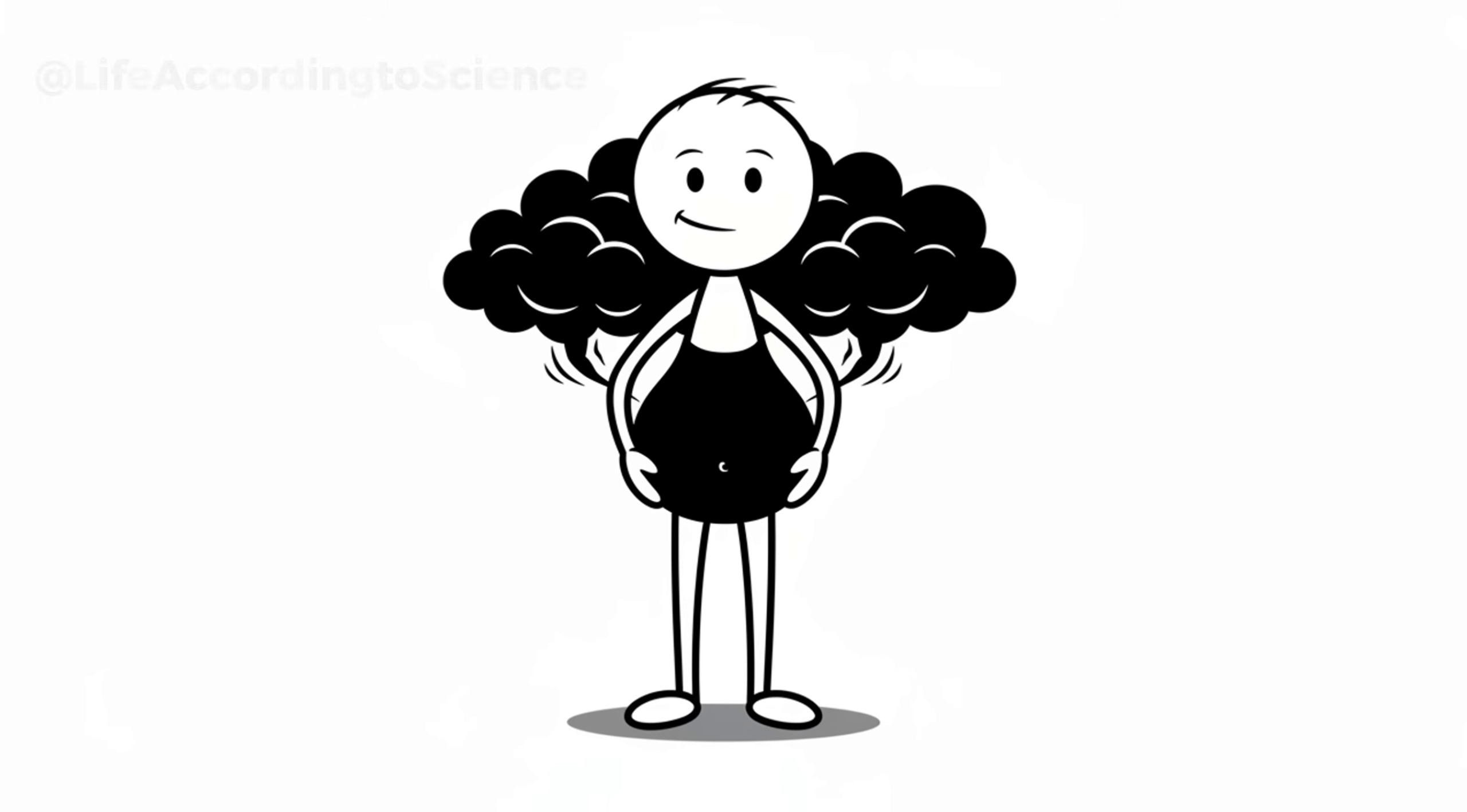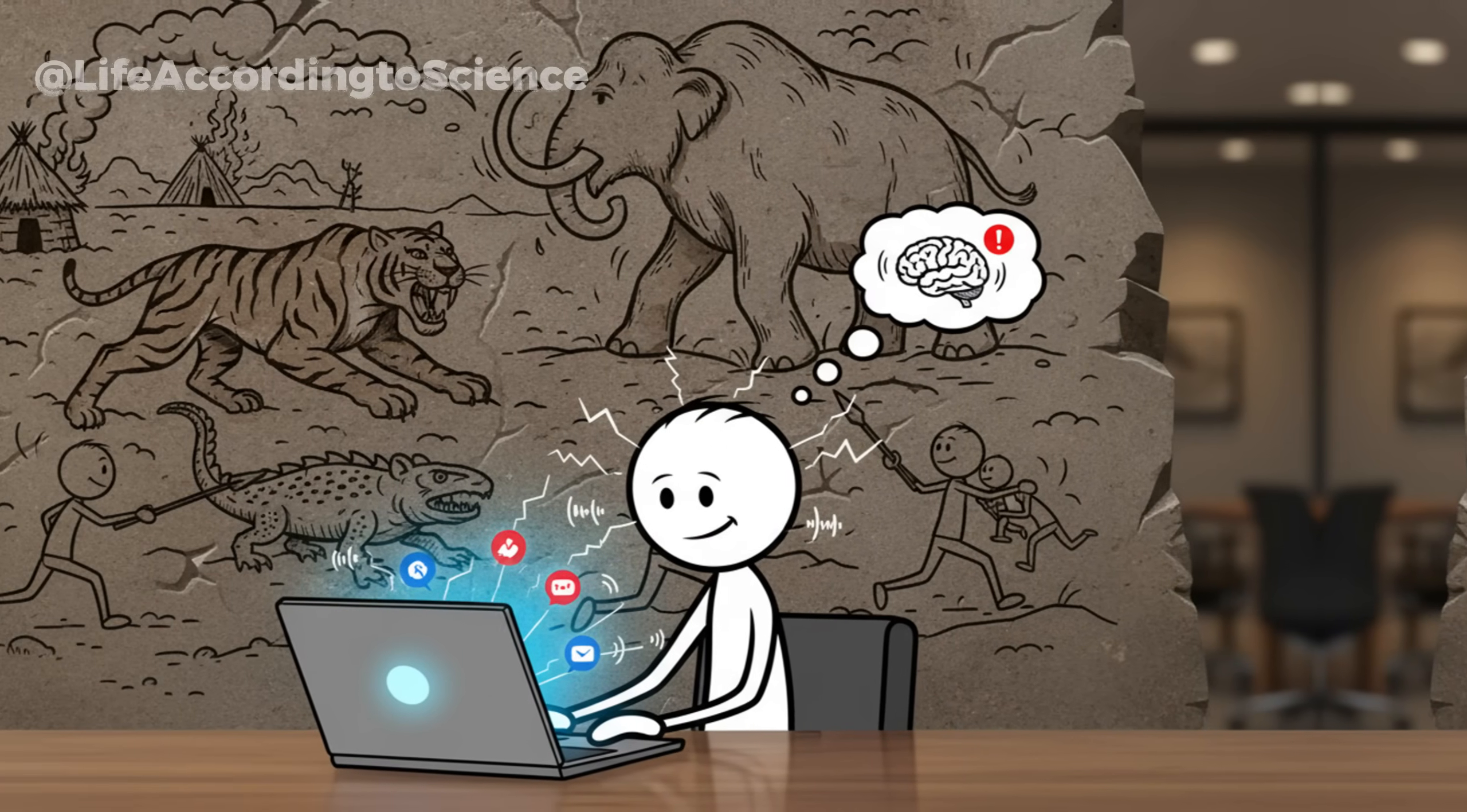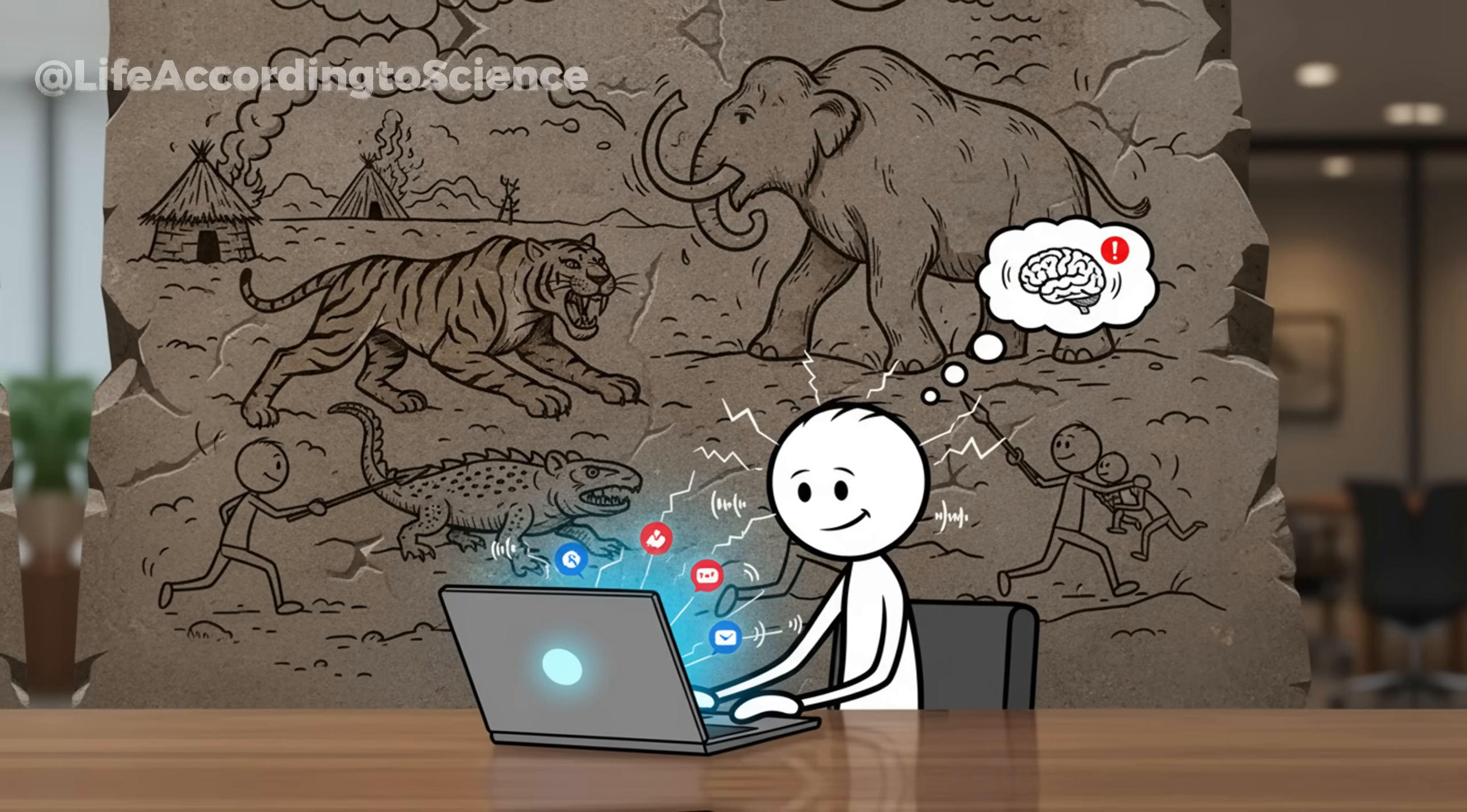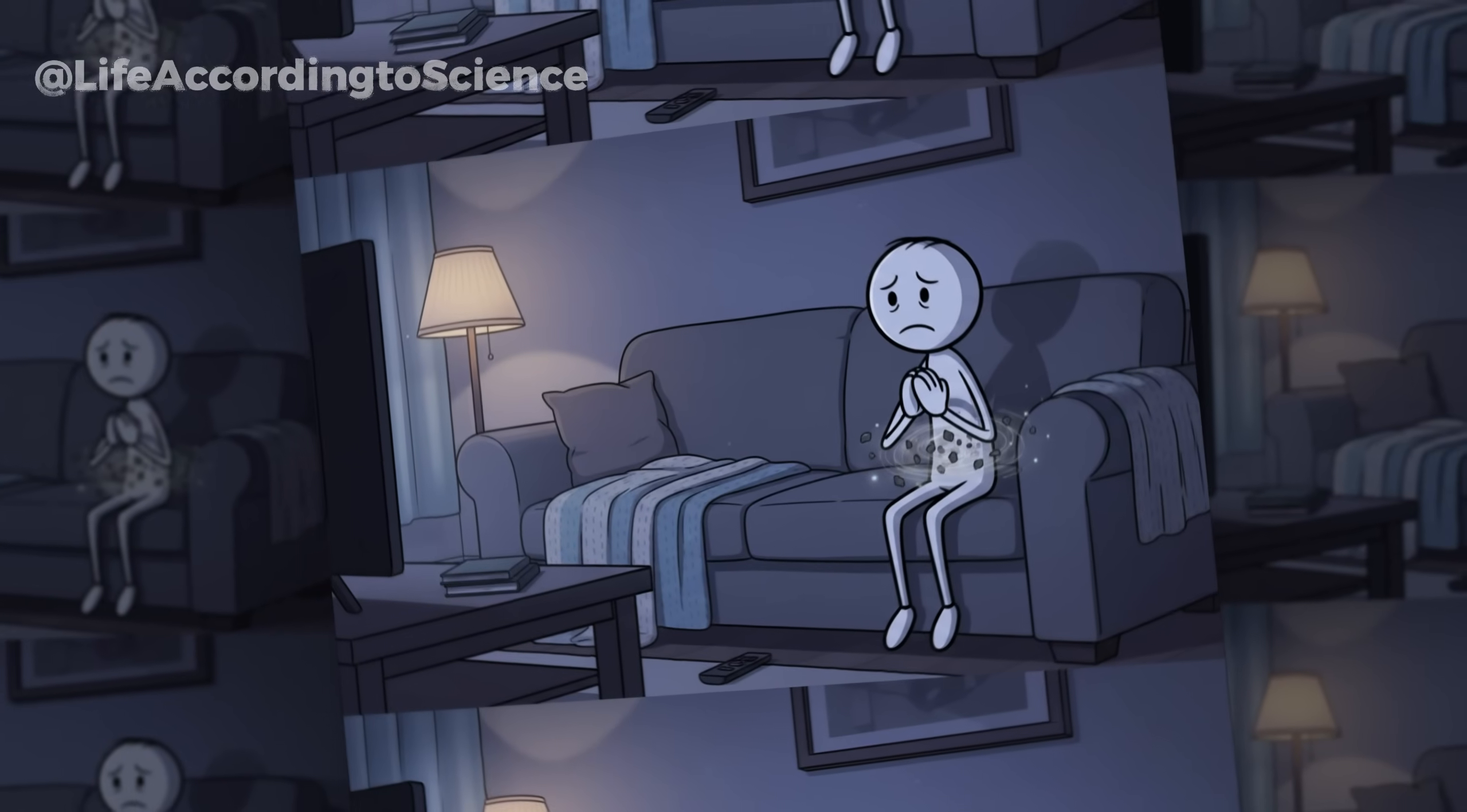It might sound strange, but your emotional state has a direct line to your waistline. When you experience chronic stress, anger, anxiety, or sadness, your brain releases cortisol and adrenaline, the same survival hormones that once helped humans run from danger. But in today's world, those dangers are emotional, not physical. They linger, day after day, keeping your body in a low-grade fight-or-flight mode.